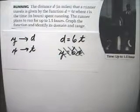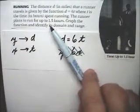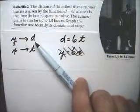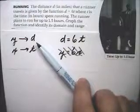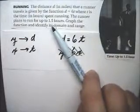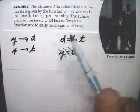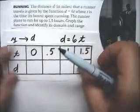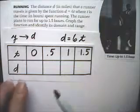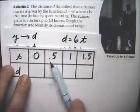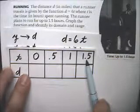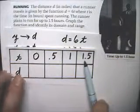It says that the time is going to be up to 1.5 hours. So the time could be 0 if he didn't want to run at all. The time couldn't be negative, of course. So I've set up a little table, and I've let the t be 0, and I've chosen 0.5, 1, and 1.5 is the greatest that it can be.